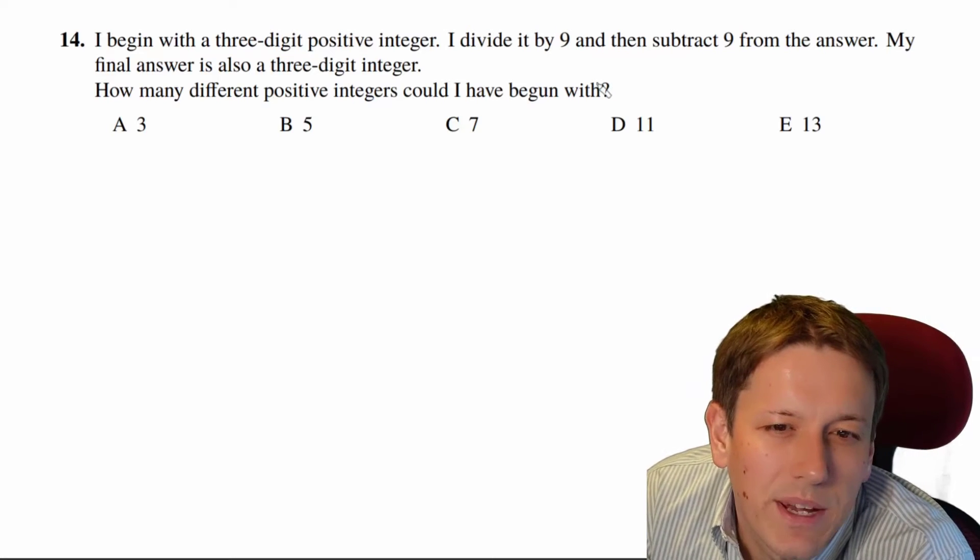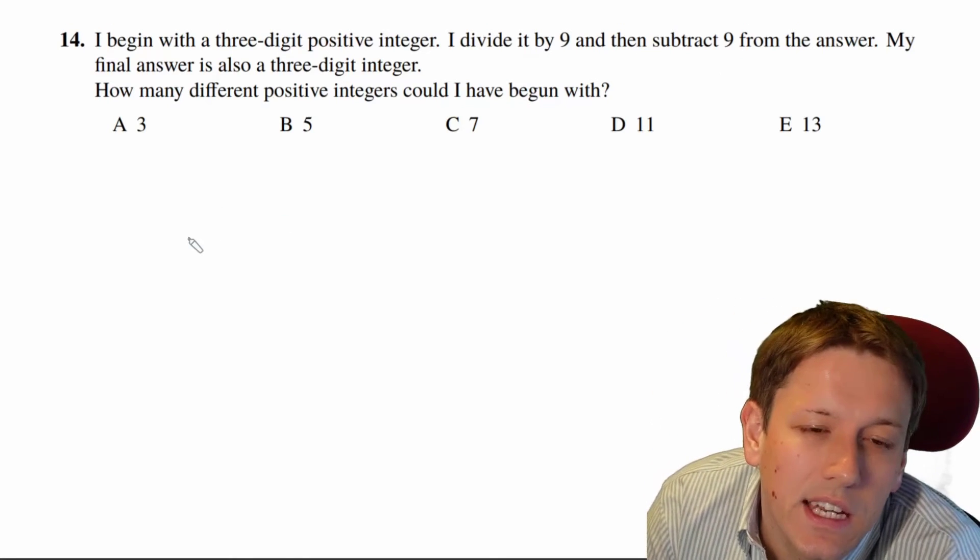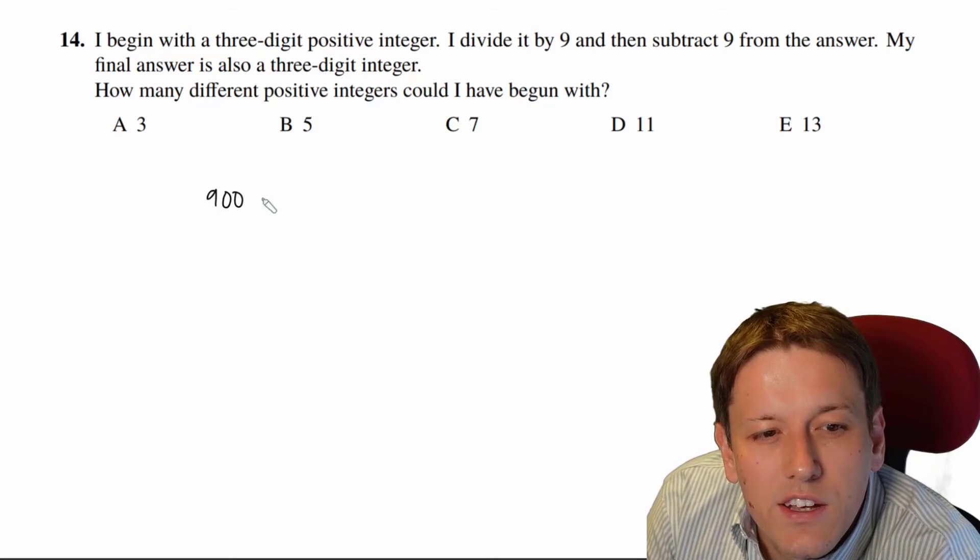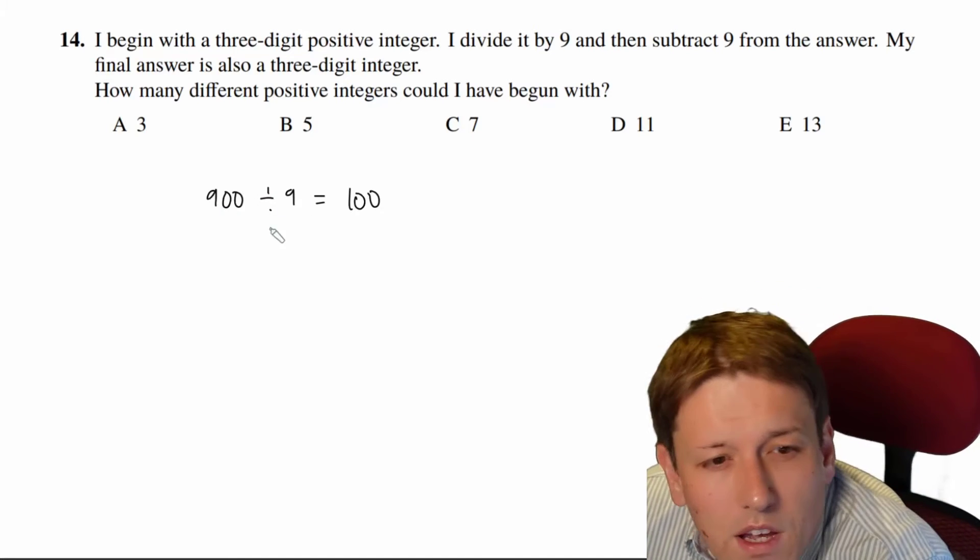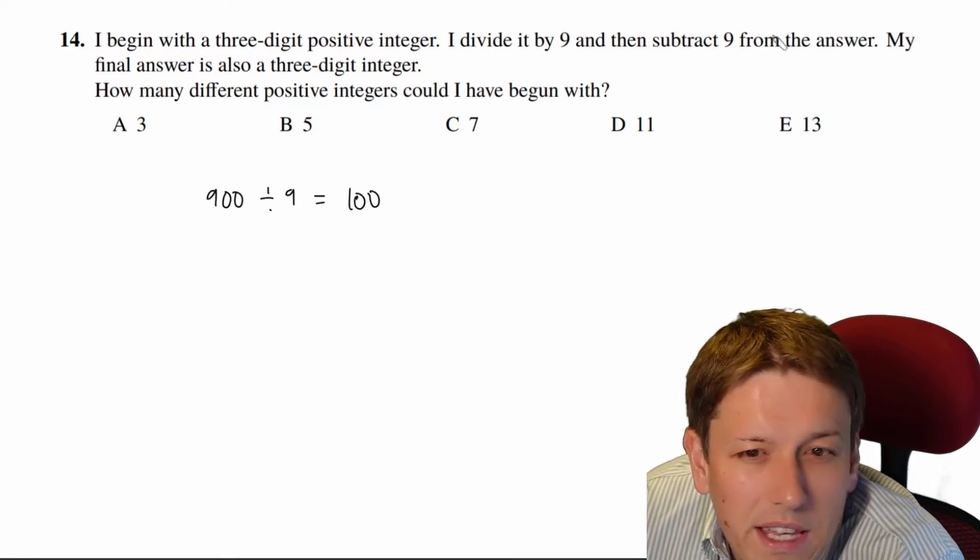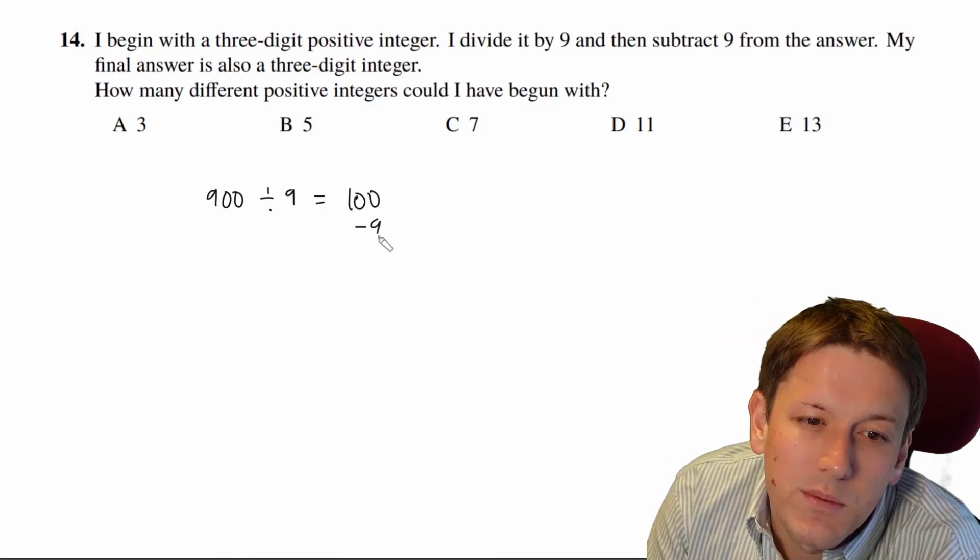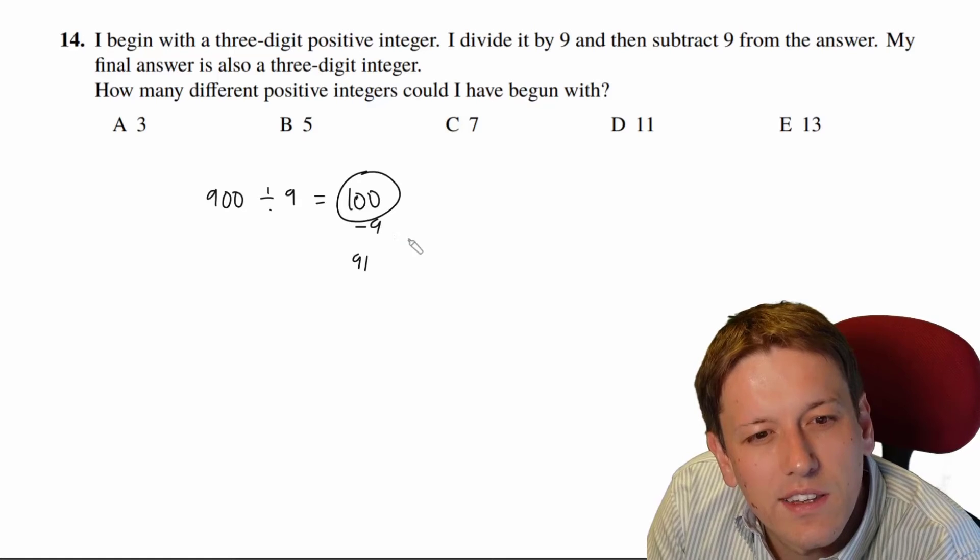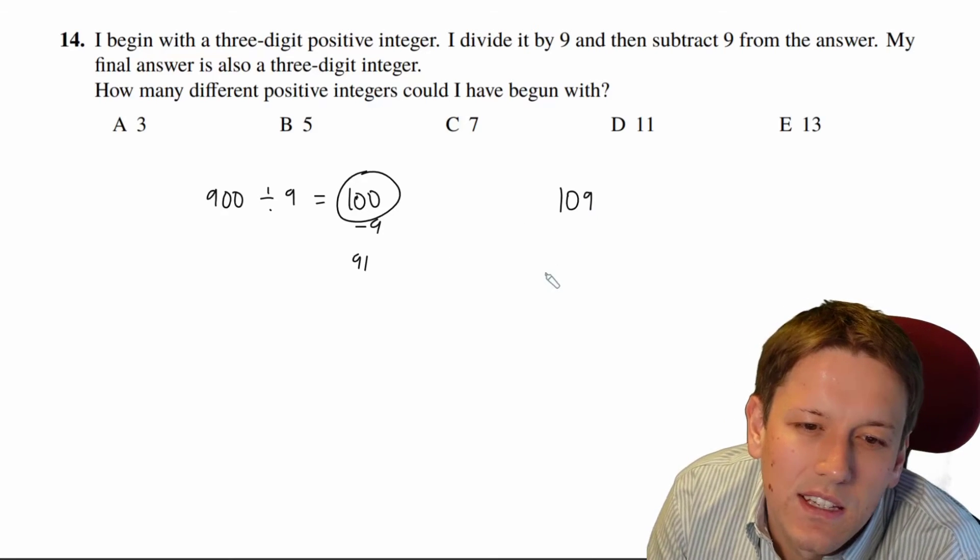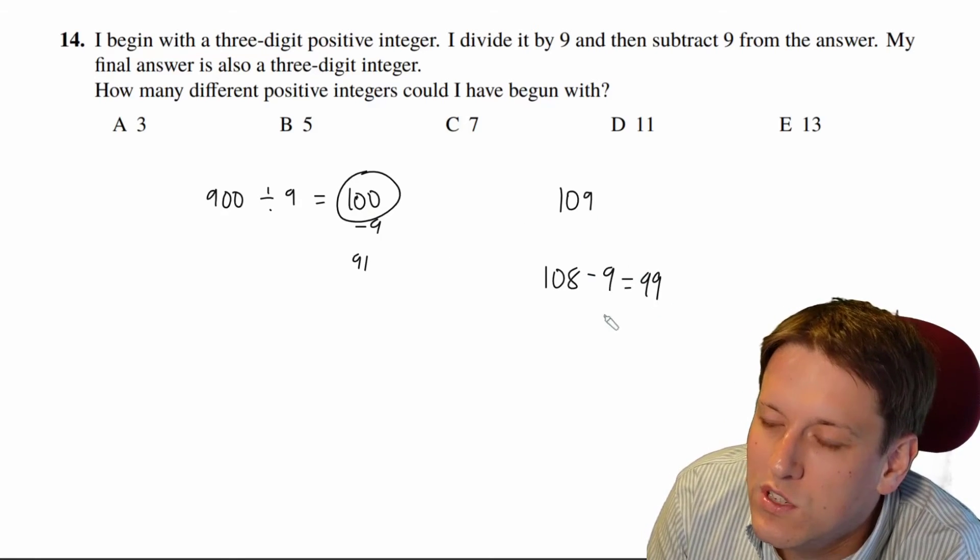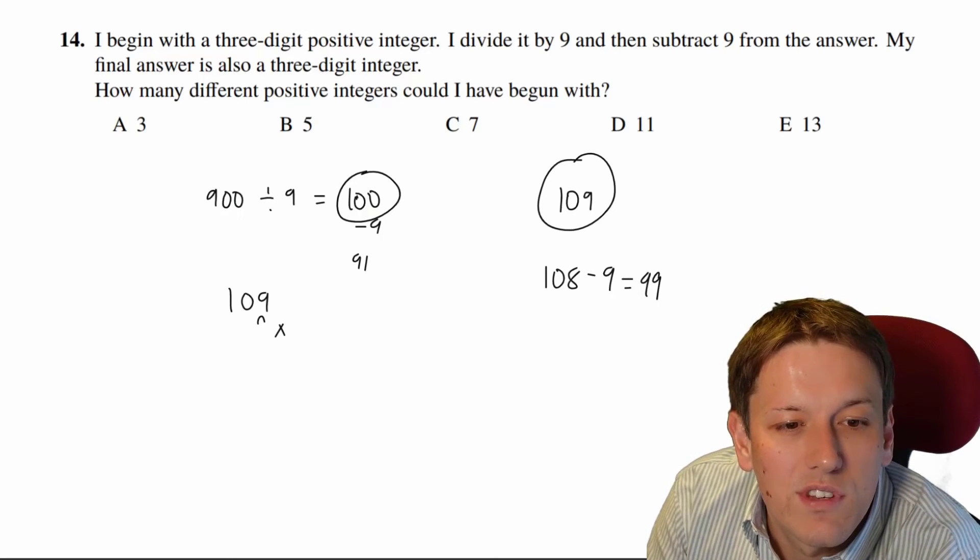The only numbers we're going to consider here are multiples of 9 because when we divide them by 9 we need to get an integer. And we're only going to consider quite large numbers. If I do 900 divided by 9 I get 100 so if I start with anything lower than 900 I am going to get a two-digit number here and when I subtract 9 it's going to be even smaller so it'll still be two digits. And in fact that's the problem here. Even if I start with 900 here by the time I subtract 9 I'm down to 91 so I actually need this final number here once I've divided it by 9 to be at least 109. If it was only 108 when I subtract 9 I'll be down to a two-digit answer again so it's got to be that when I divide it by 9 I get at least 109 so my starting point has got to be 109 times 9 and that gives you 981 here.